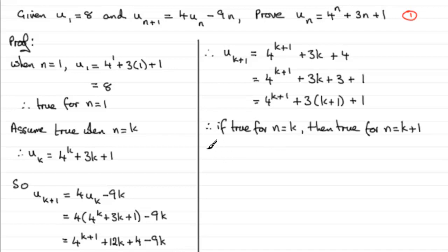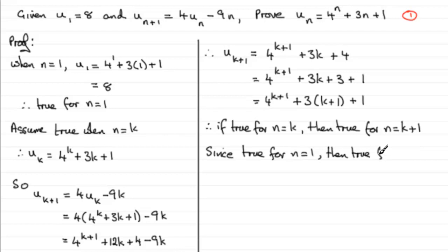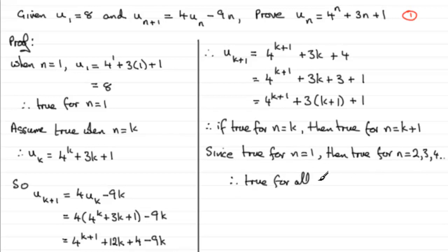Since the formula is true for n=1, and we've shown that if it's true for n=k it's true for n=k+1, it must be true for n=2, then n=3, n=4, and so on. Therefore the formula is true for all positive integers n.